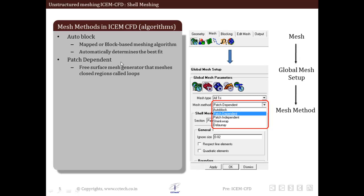Next is patch dependent. Within patch dependent, a free surface mesh generator meshes closed regions called loops. This type of mesh is seeded according to the node spacing defined on the curves. The surface mesh is generated using these number of nodes as inputs.